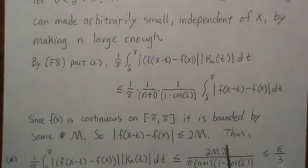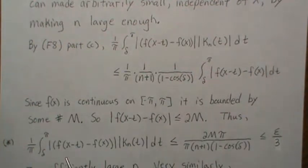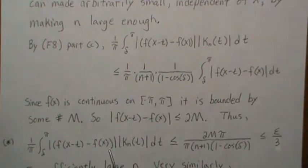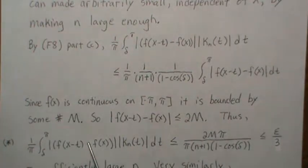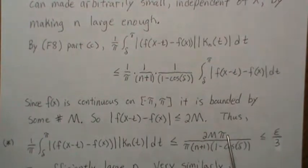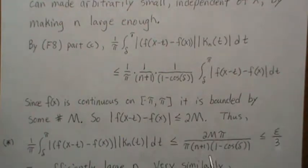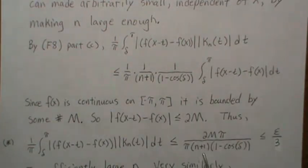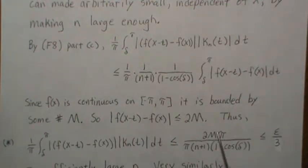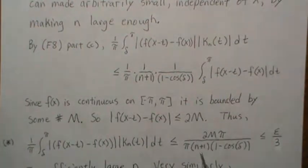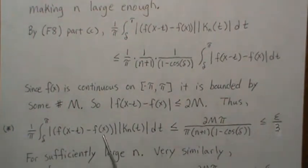We call this bound 1-star. Our original integral is bounded by this expression involving π and 2M divided by a quantity that grows with n. Since everything except n is constant — δ, M, π are all fixed — as n goes to infinity this gets really small. At some point we can pick n sufficiently large so this is less than ε/3. So this integral is less than ε/3 for sufficiently large n.